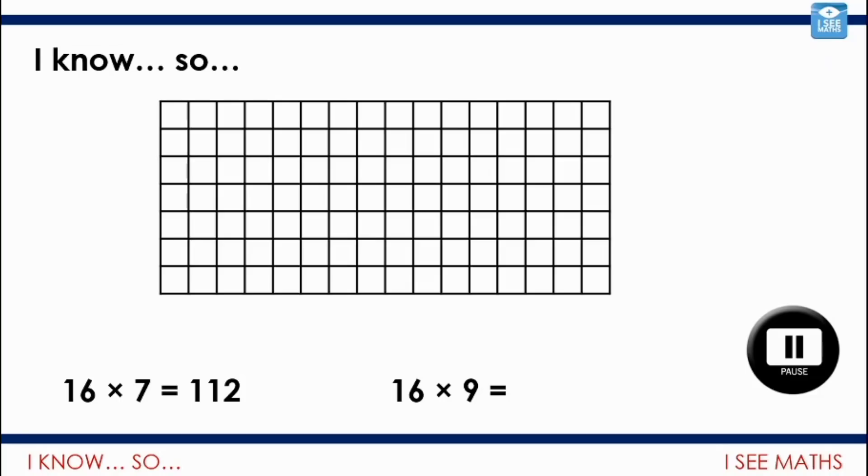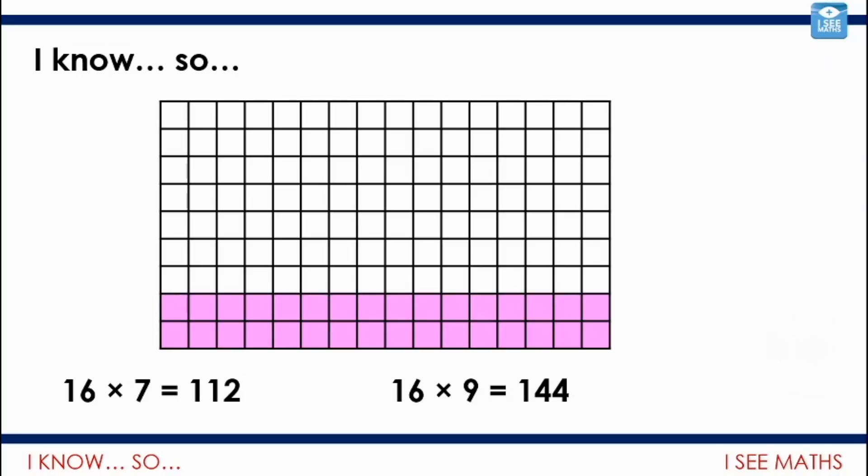Okay, let's have a look how that picture changes. Well, 16 multiplied by 7. To make that 16 multiplied by 9. Well, I'll have 2 more lots of 16. So, in total it'll be 32 more. 16 nines, 144.